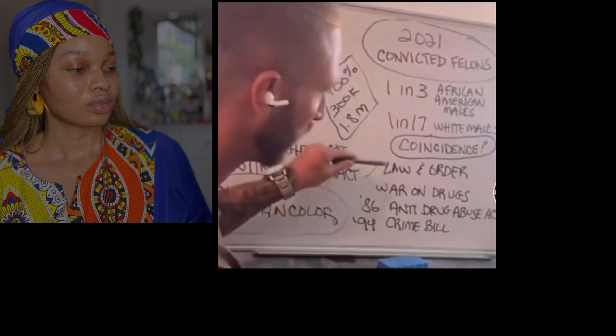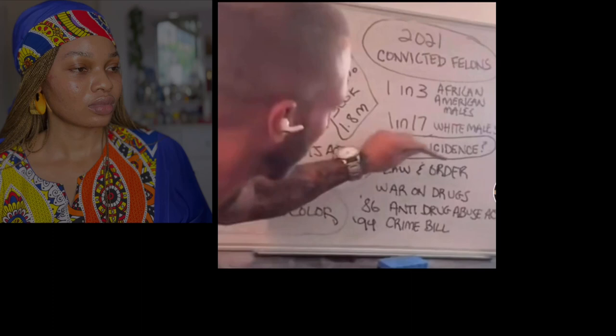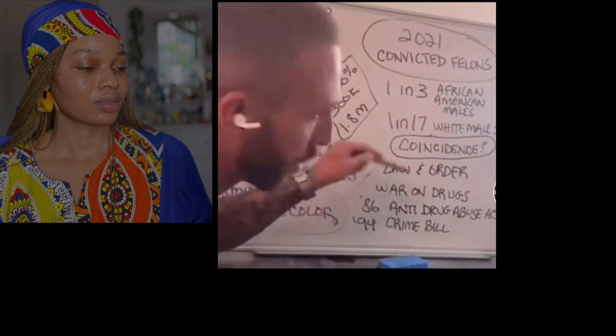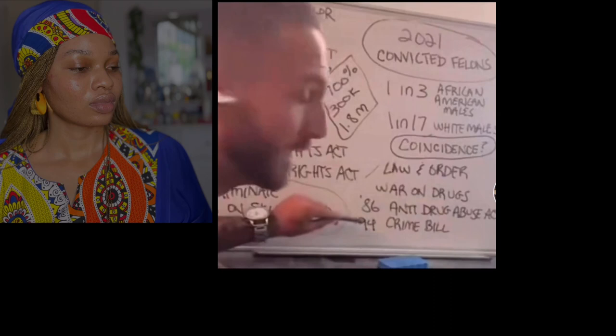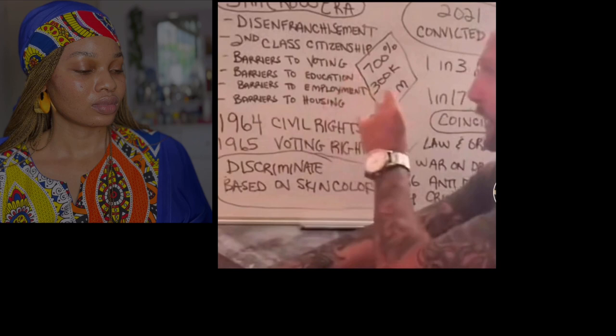It was because of the law-and-order agenda, which increased police spending but decreased education funding — creating the school-to-prison pipeline. We also created the war on drugs, which we now know is a war on people. In 1986, we passed the Anti-Drug Abuse Act, which differentiated between powder cocaine and crack cocaine — disproportionately impacting people of color. We also had the 1994 crime bill with the truth-in-sentencing act, which led to higher incarceration rates and harsher sentences for people of color.